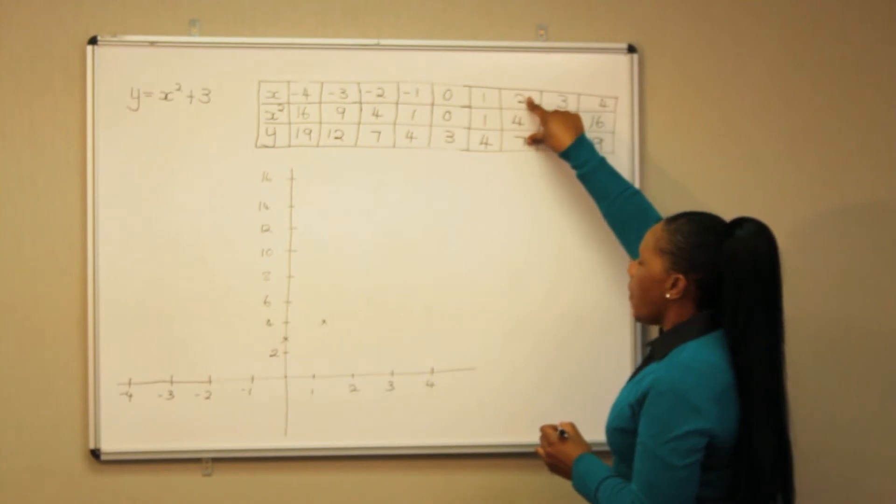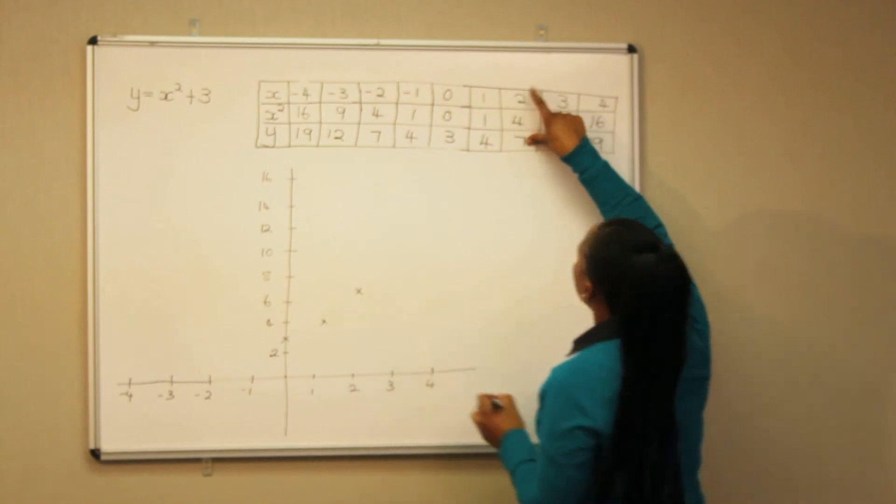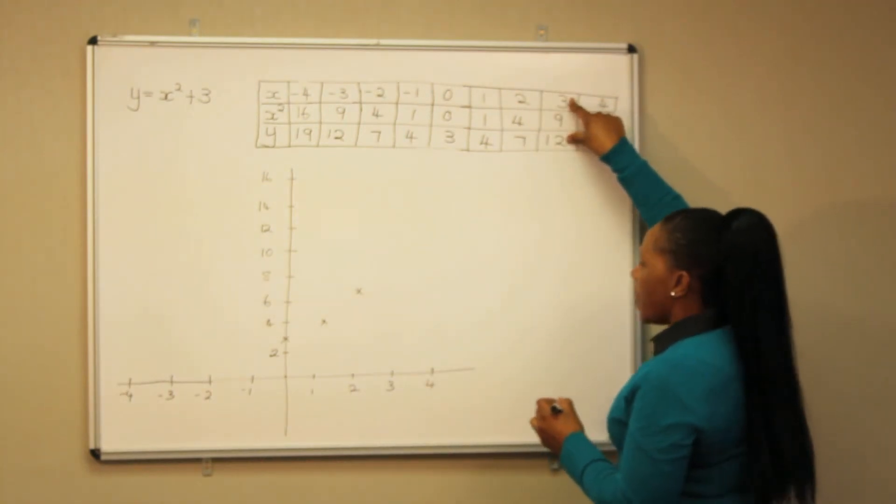When x is 2, y is 7. When x is 3, y is 12.